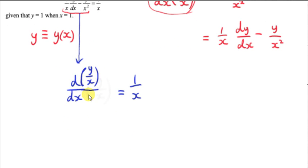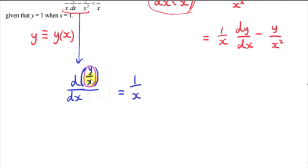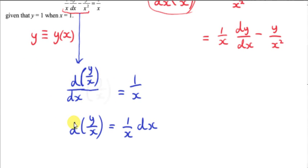Now let's consider the differentials in this equation. We call the dependent variable just the thing inside the brackets — y/x becomes our dependent variable, and the independent variable is x. So we want to separate the variables: get everything involving y/x on one side and everything involving x on the other side. You can see that this equation is separable — we just multiply both sides by dx. Now we integrate both sides of this separable differential equation.